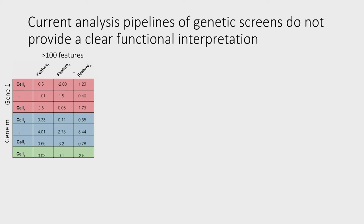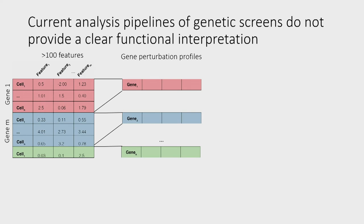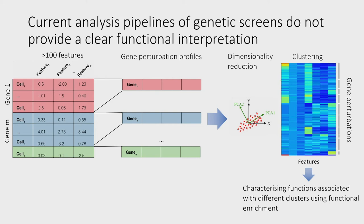Current analysis pipelines have not developed a lot in the last few years. Basically, for every gene knockdown, we have measurements from hundreds of cells, and we simplify this by taking the average of each gene perturbation. We then apply dimensionality reduction to reduce the number of features, and use clustering to group genes that have similar phenotypes, which we assume means they have similar functions. To interpret what each cluster means, we use functional enrichment analysis.